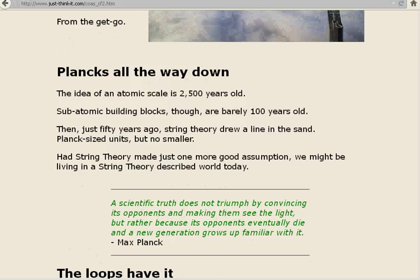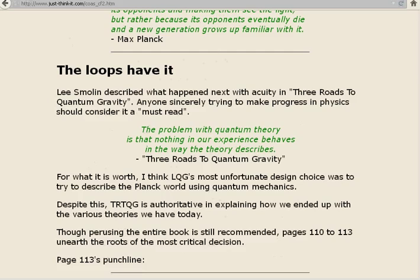The loops have it. Lee Smolin described what happened next with acuity in Three Roads to Quantum Gravity. Anyone sincerely trying to make progress in physics should consider it a must-read. The problem with quantum theory is that nothing in our experience behaves in the way the theory describes. Lee Smolin. For what it is worth, I think loop quantum gravity's most unfortunate design choice was to try to describe the Planck world using quantum mechanics. Despite this, Three Roads to Quantum Gravity is authoritative in explaining how we ended up with the various theories we have today. Though perusing the entire book is still recommended, pages 110 to 113 unearthed the roots of the most critical decision.